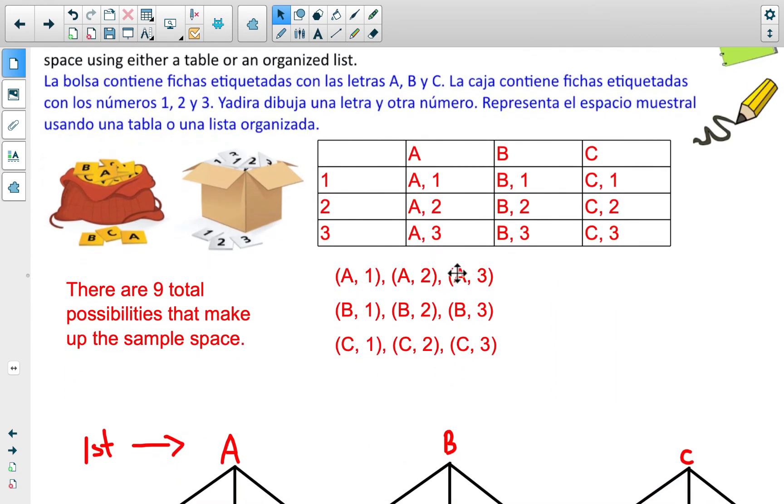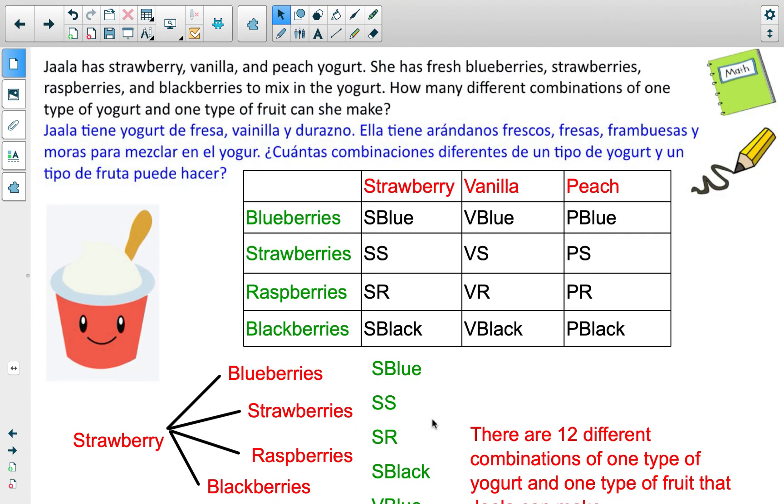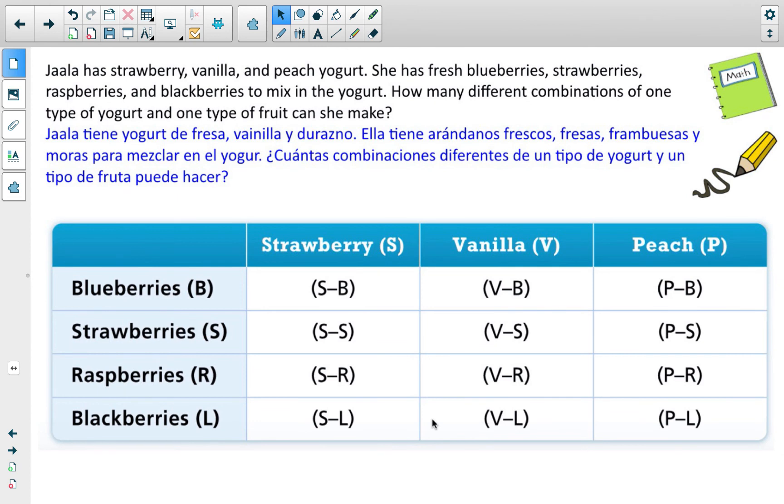So we now have three strategies. We have just writing out a list. We have creating a table. We have creating tree diagrams. You need to be comfortable creating and analyzing all those different approaches. You'll see that today in your quizzes. This is a neater version of the table. In this case, this table labeled blackberries with an L, just a completely different letter. But notice there's that distinguishing marking there. They didn't just put B twice because that indicates it's the same thing when in this case it's not. You can still see the 12 different outcomes that make up our sample space.